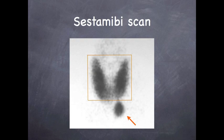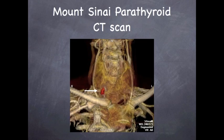Many patients are referred for a nuclear medicine study called a Sestamibi scan. In this picture, you can see the thyroid gland outlined in the square and an abnormal left inferior parathyroid gland indicated by the arrow. The most accurate parathyroid localizing study is parathyroid CT scanning. At Mount Sinai, we have a dedicated parathyroid radiologist who performs and reads all of our parathyroid CT scans.